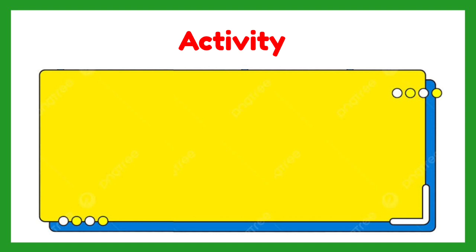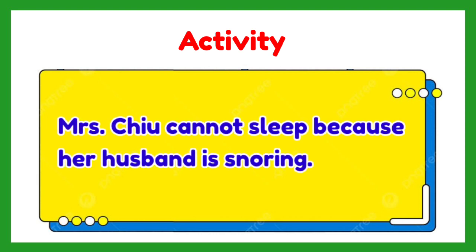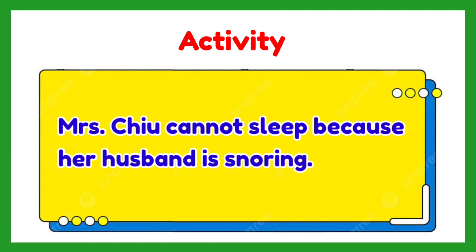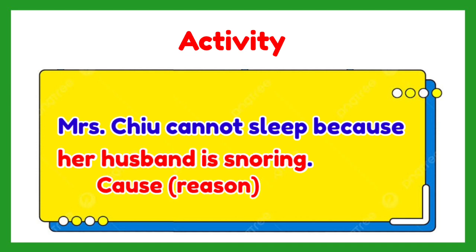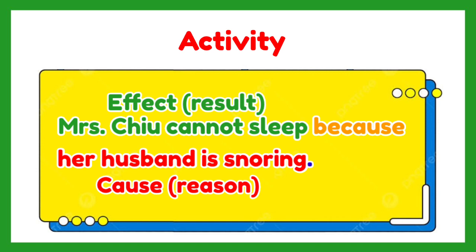'Mrs. Chu cannot sleep because her husband is snoring.' The cause is: her husband is snoring, introduced by the word 'because.' The effect is: Mrs. Chu cannot sleep — it is the result of her husband's snoring.